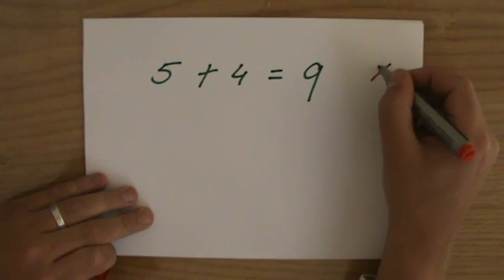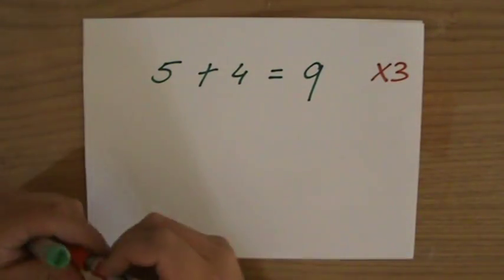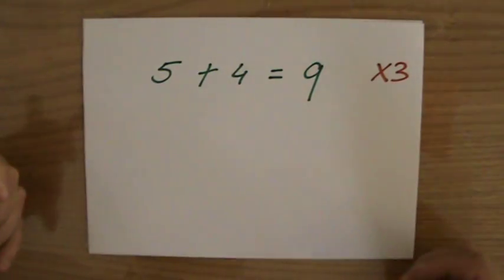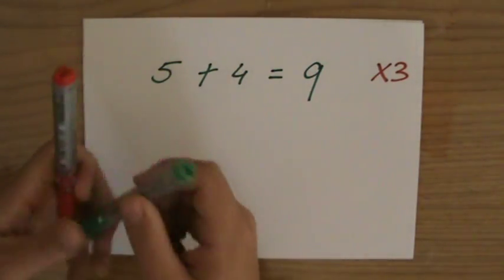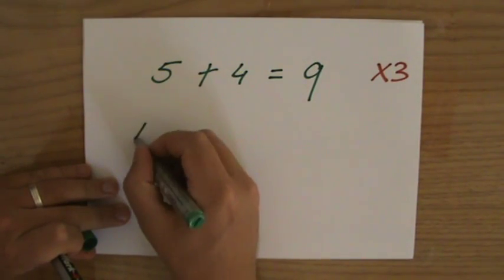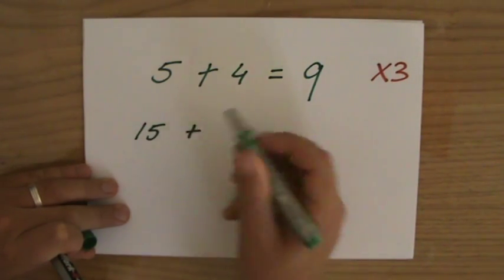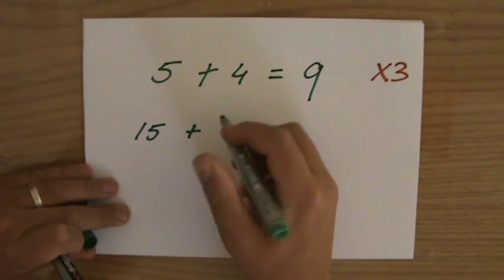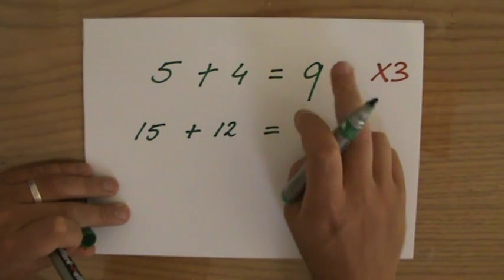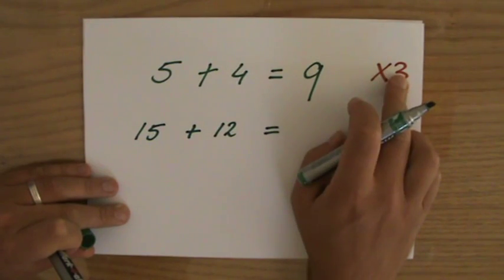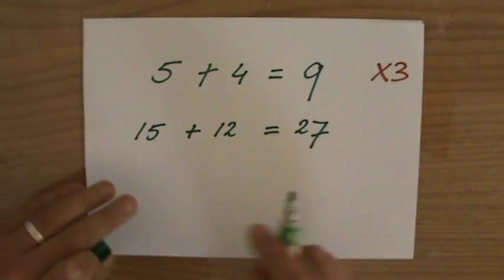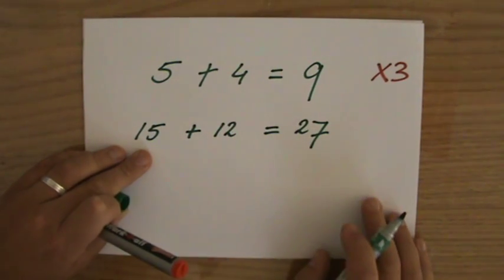Now if I would multiply everything by 3, is this still going to be true? Is this still going to be the same? Well, let's have a look. What is 5 times 3? That is 15 plus, what is 4 times 3? That will be 12 equals every term. So also the last one times 3, 9 times 3, 27. And 15 plus 12 indeed is 27.